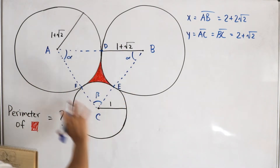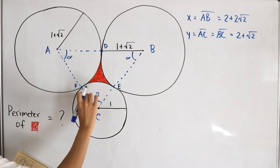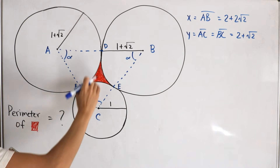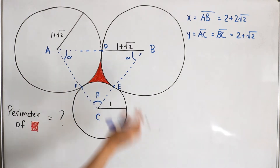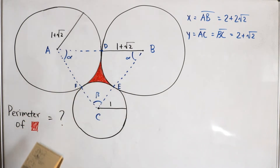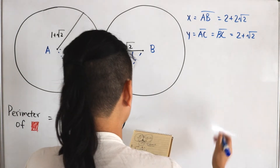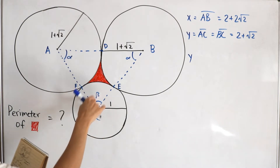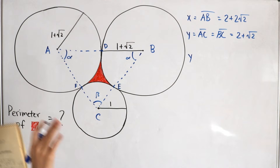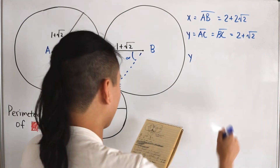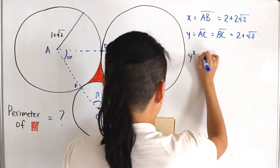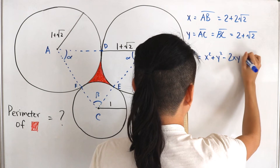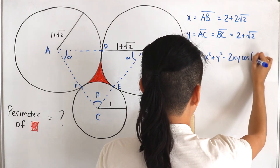We just need to find what our angles are so that we can calculate the arc lengths for each circle and add them together to get the perimeter of the shaded area. To find our angles, we're going to use the law of cosines. We'll solve for alpha, since solving for beta is a bit more tedious. Setting it up: y² equals x² plus y² minus 2xy·cos(α), where alpha is the angle directly across from the appropriate side.